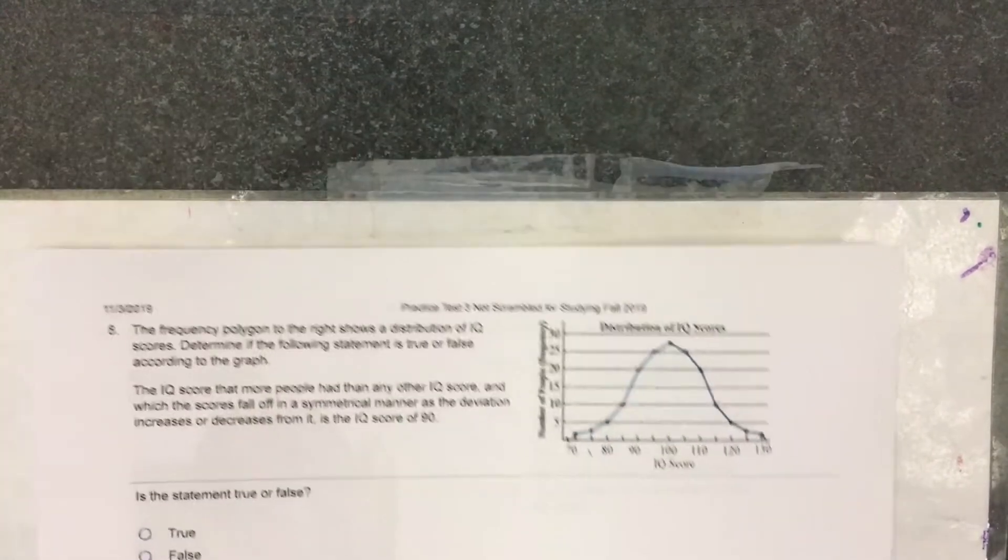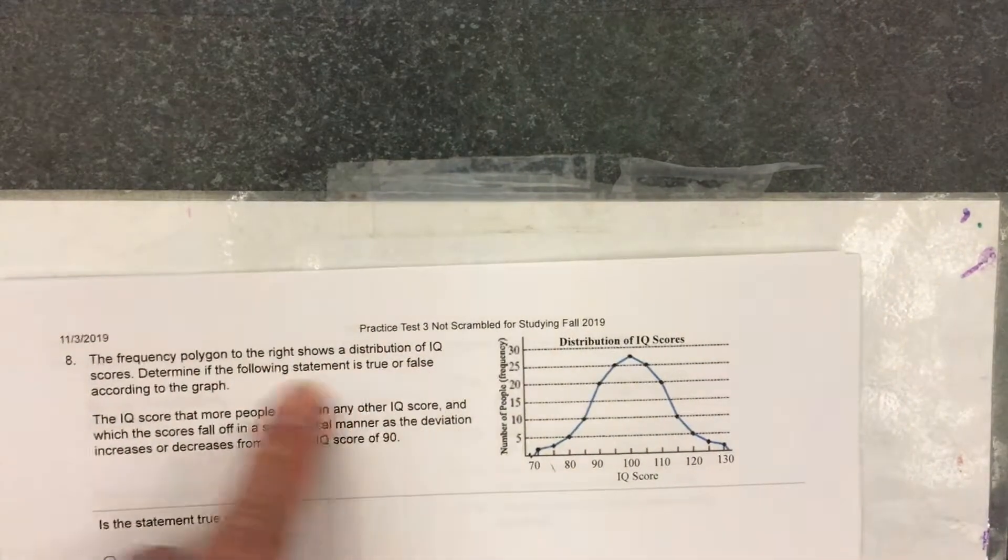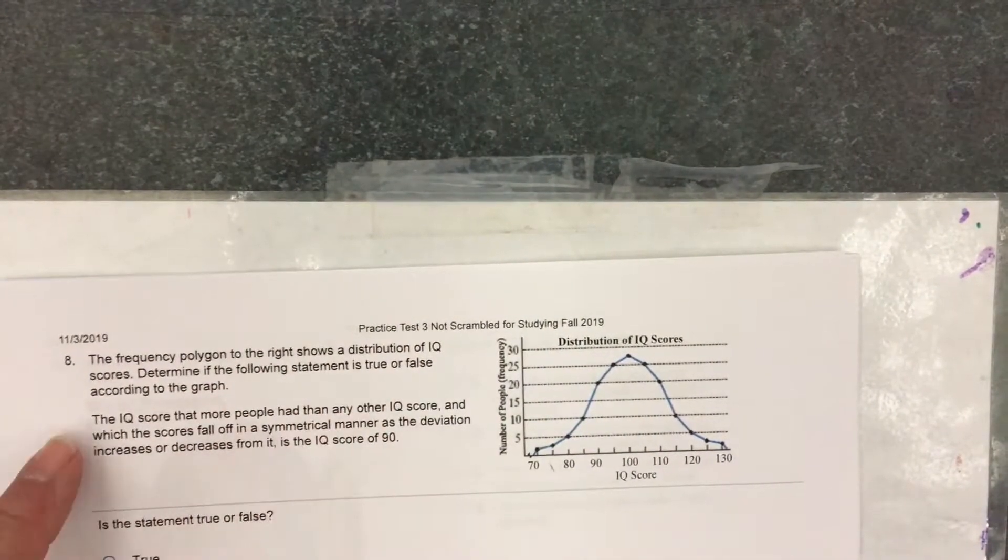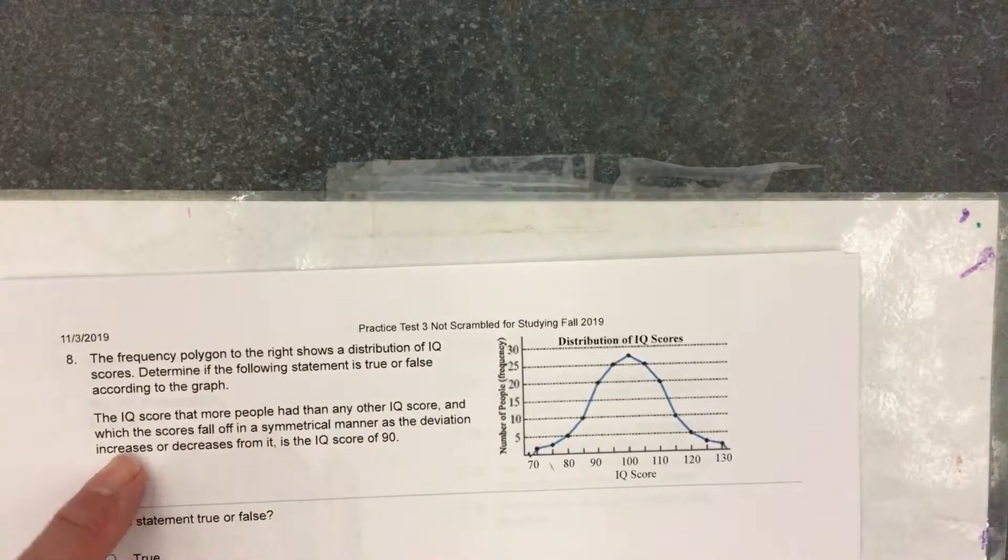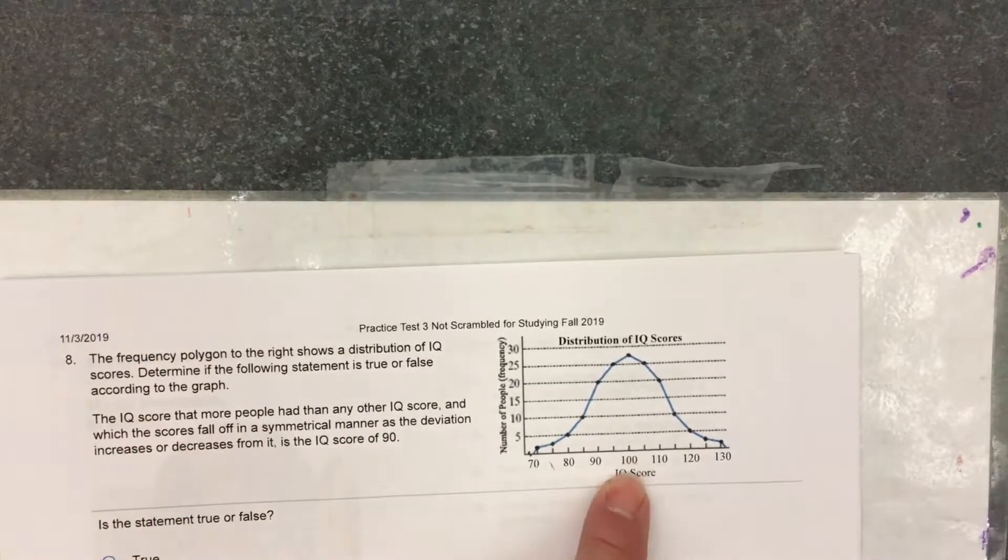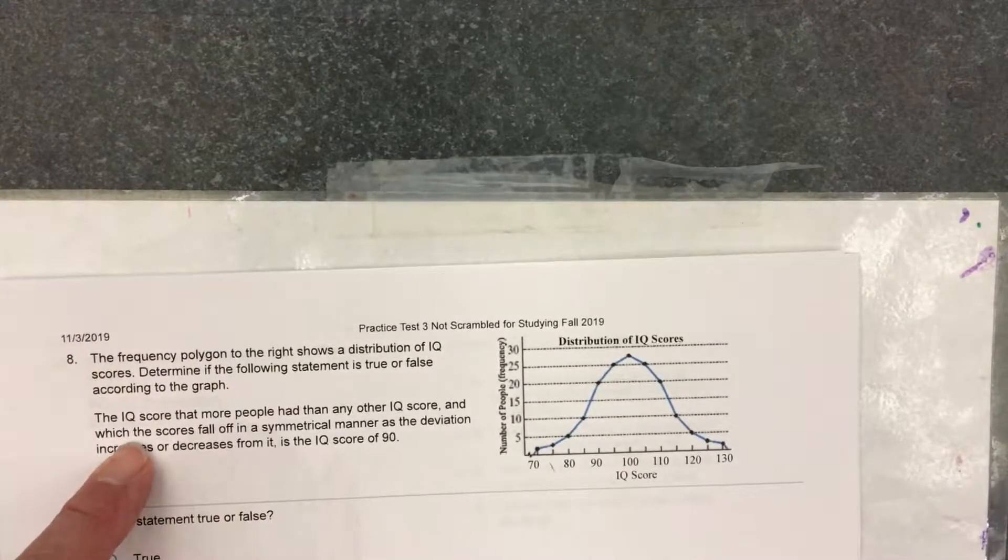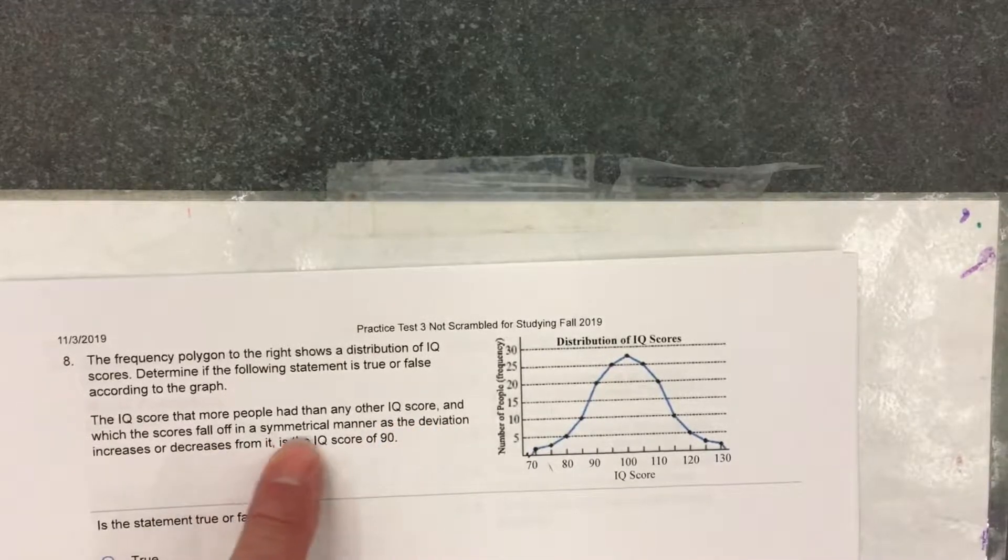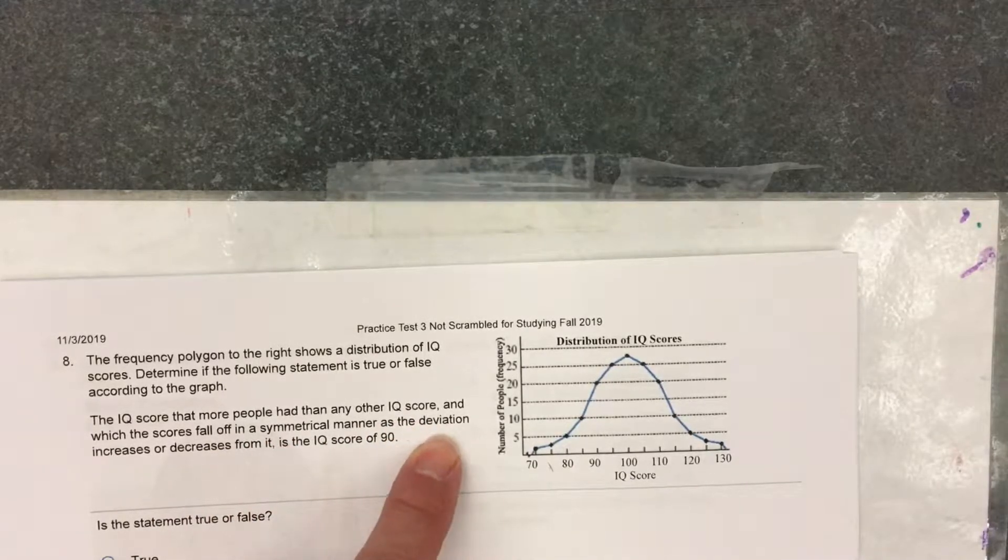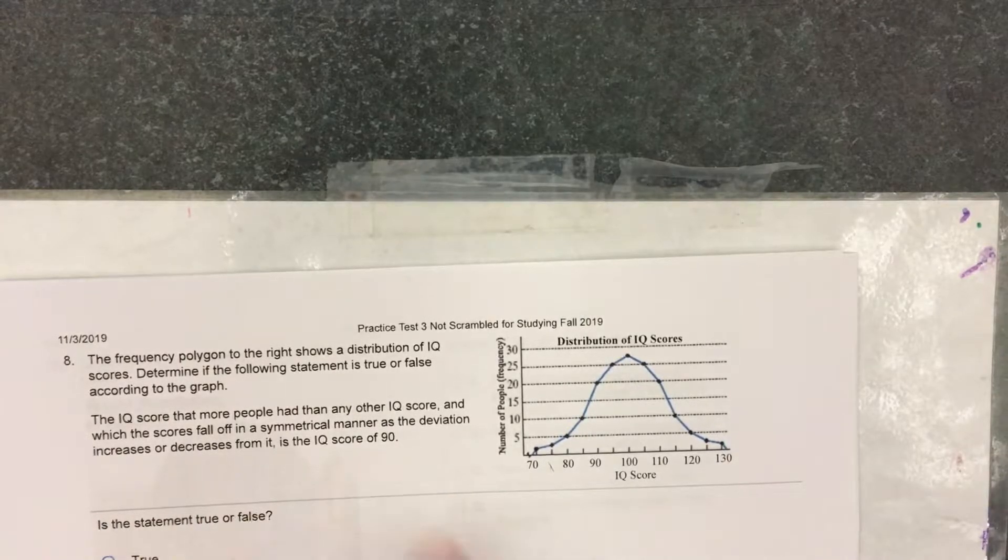For problem number eight, there's a frequency polygon and they ask a couple of questions about it. Determine if the following statement is true or false. So this is something about IQ scores. The IQ scores that more people had than any other IQ score in which the scores fall off in a symmetrical manner as the deviation increases or decreases is 90.